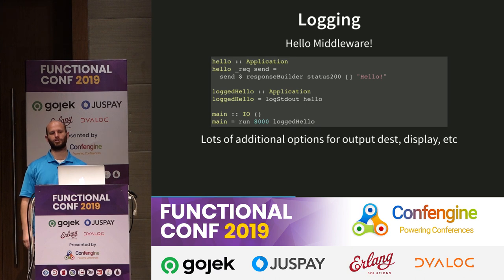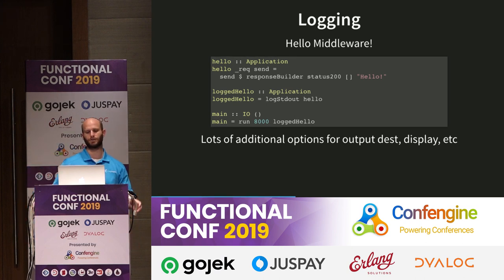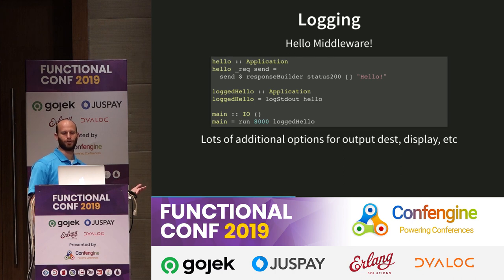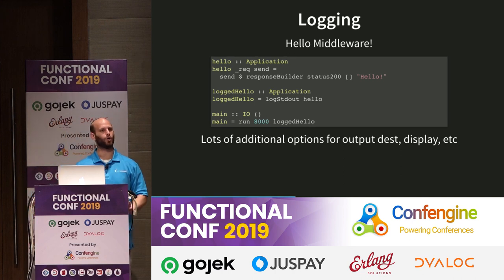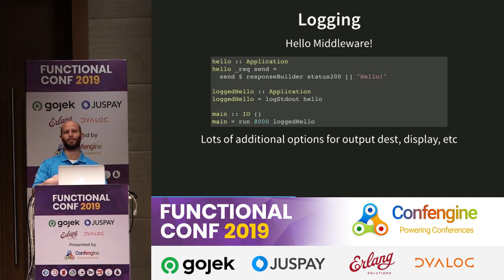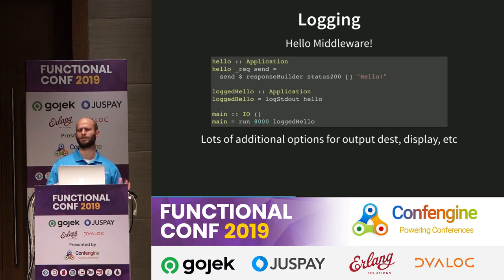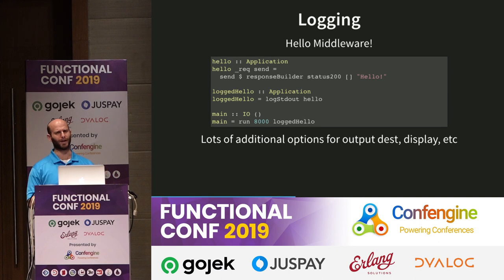Let's say that we want to log every incoming request and the outgoing response to our application. I have my hello world application. I then have the logged version of hello world — all I've done is apply the function logStdOut on top of the function 'hello', and that's it. We now have the ability to run the exact same application, except now we're going to get log output to go along with it. The logging module in WAI-extra has a huge number of functions and configuration options because everyone needs to log differently, but by default it uses Apache-style logging right out of the box.